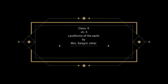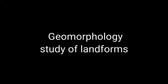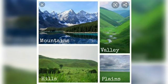Welcome to this session on Class 9 Chapter 5: Landforms of the Earth, Geography. The study of landforms is also known as geomorphology. The landforms of the earth are what is visible to us — the mountains, the hills, the valleys, and the plains — but what is not visible to us is how they are formed.